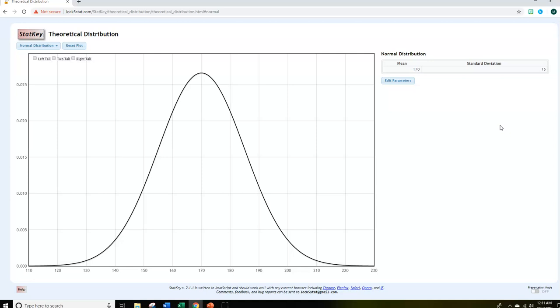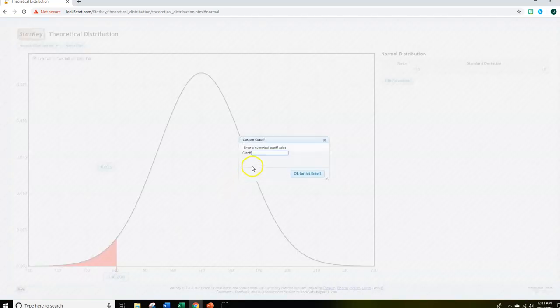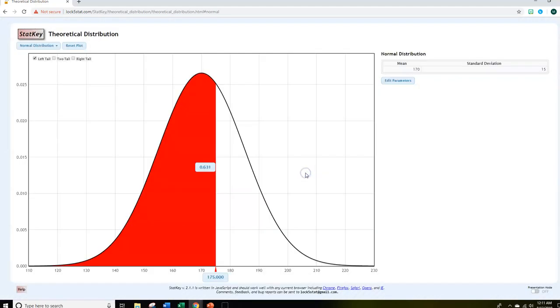Well, we may want to find out the probability of getting below a score of 175. So below would mean click on the left tail. I would have to once again, left click here and change that to cut off value of 175. Click OK. And there it's going to give me that there's a 0.631 probability of getting below a 175.